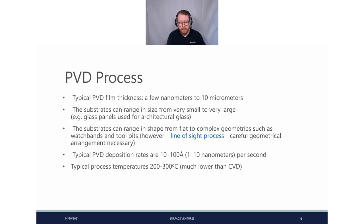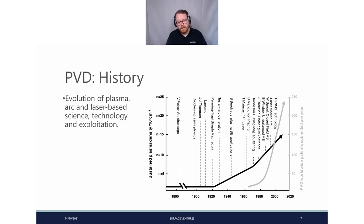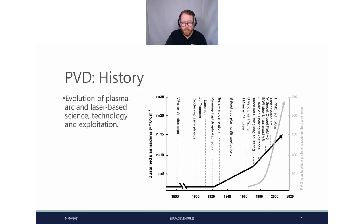Deposition rates can vary from 10 to 100 angstroms per second, with typical process temperatures being 200 to 300 degrees — though you can go lower than that. Typically when you go higher you're then into the realms of CVD or plasma-assisted CVD. In terms of history, there have been quite a few advances, with the most recent being HiPIMS technology — high-power impulse magnetron sputtering. There is still a lot of work to be done in HiPIMS, and you'll see conferences and seminars dedicated just to this technology.